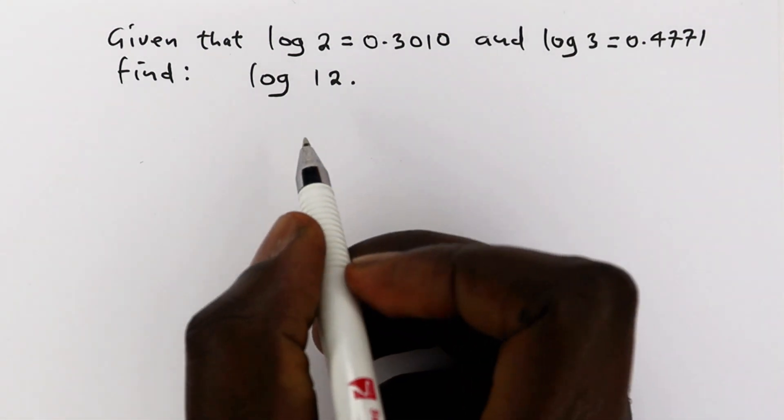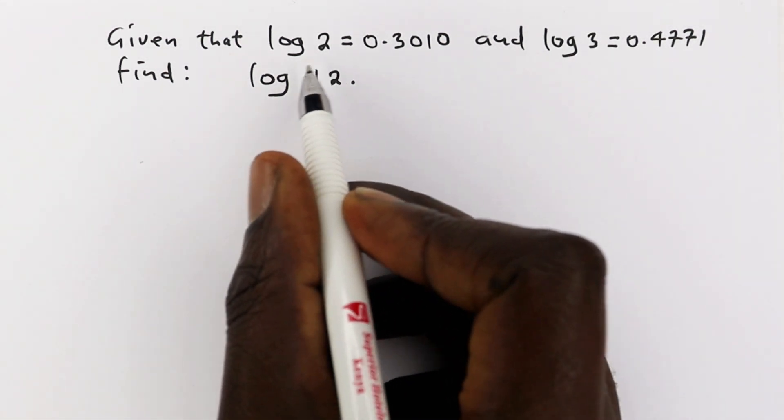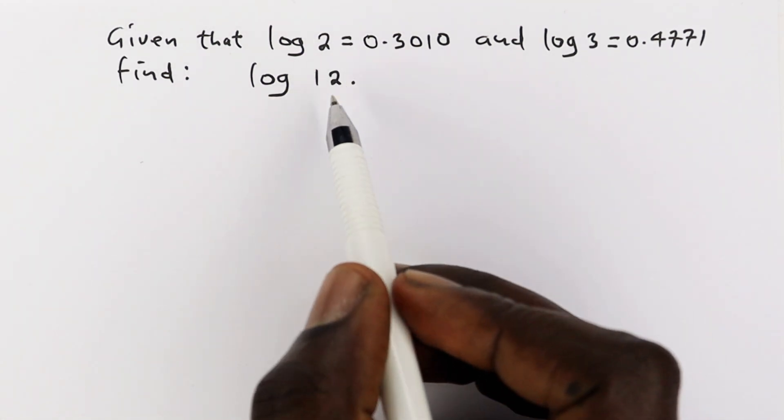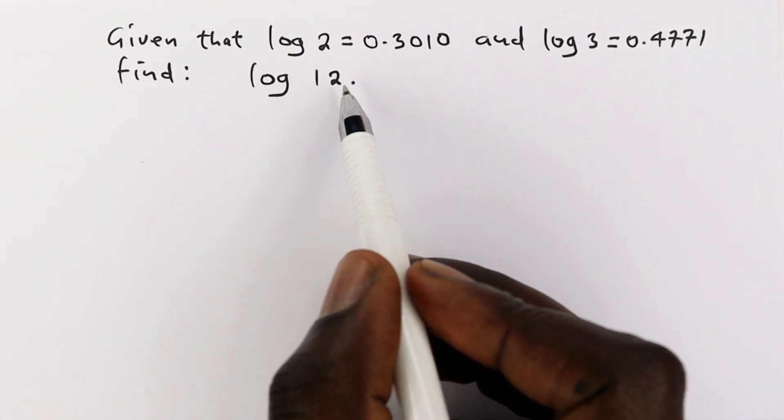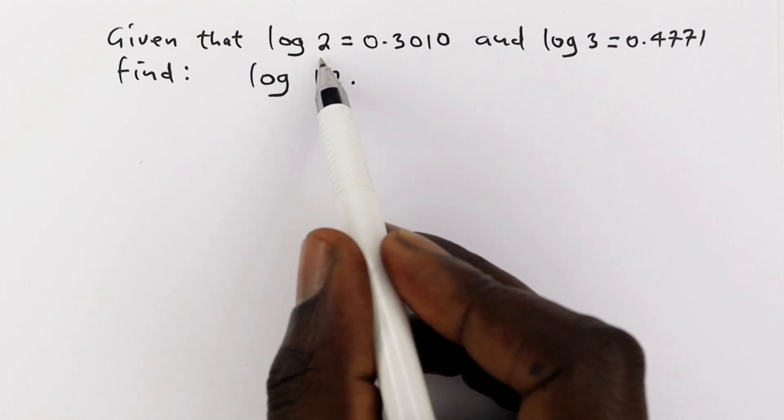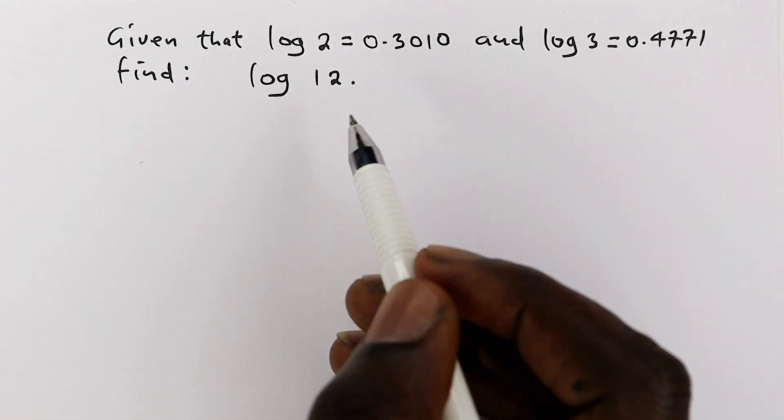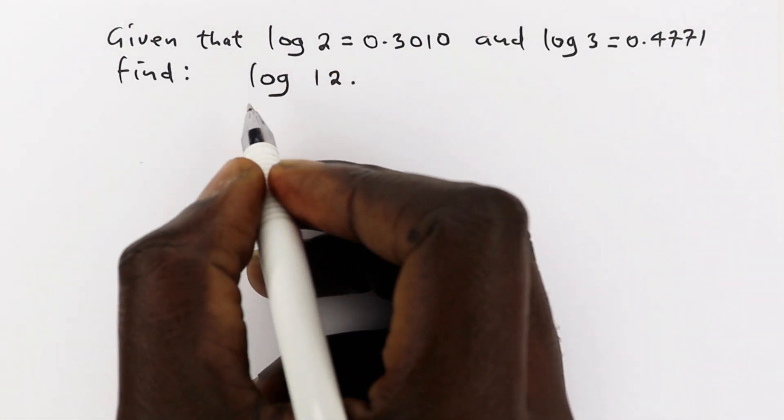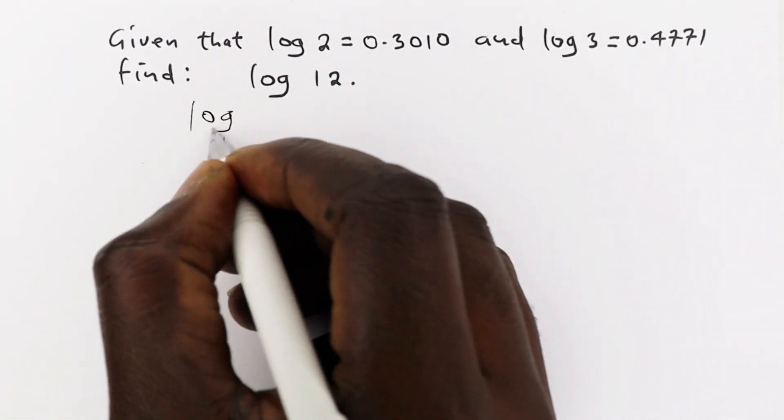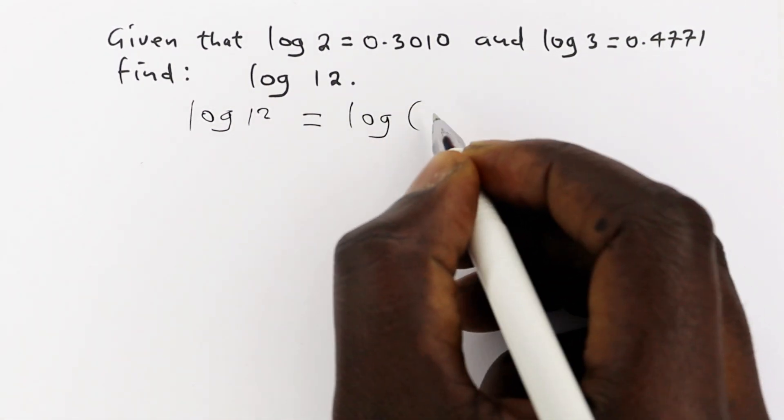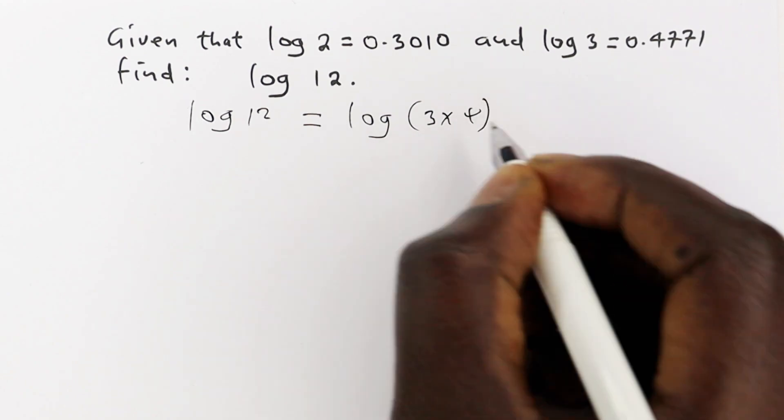So we just want to use the laws of logarithms to write 12. What we are intending to do is to write 12 such that we only have numbers like 2 and 3, because those are the only values that we have. So we can write log 12 as log of 3 times 4.